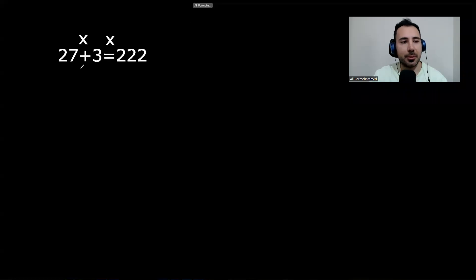Hello and welcome. Let's do this Olympiad question together. 27 to the power of x plus 3 to the power of x equals 222. I always suggest finding the range for x, so we kind of guess the value of x as the first step.